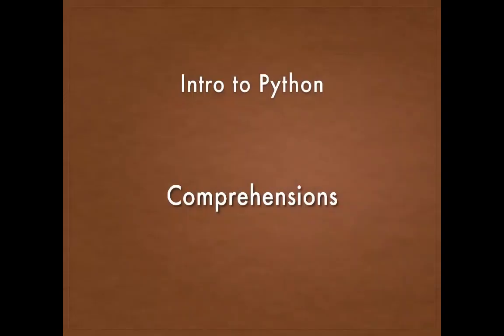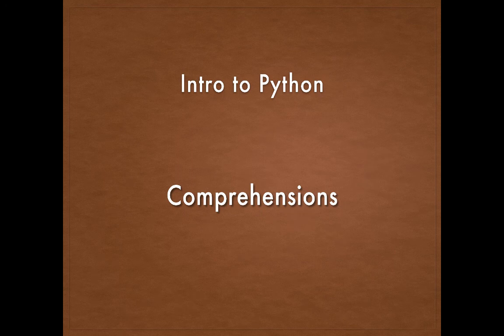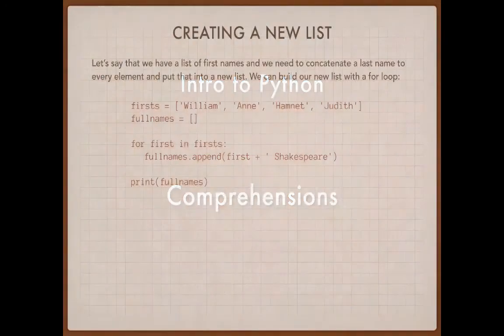Building lists, dictionaries, sets, and all kinds of complex data structures is a really common occurrence in Python, and we can always use a loop to do that. But Python has a terrific way called comprehensions — it's a shortcut. You will see this all the time in Python, and it makes Python very concise and very expressive. I love comprehensions, and you will too.